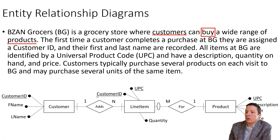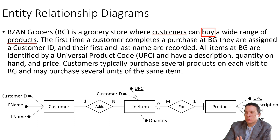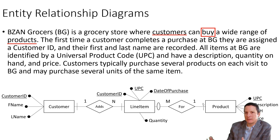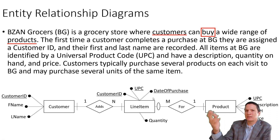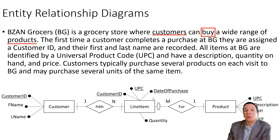Some of you may have already noticed the problem we're going to encounter here, which is that in this current design a customer could only purchase a product one time. So what we actually want to do is probably record something like the date of the purchase, so that on multiple days the customer could come back and purchase the same product or a product with the same UPC. I have to admit this is really a lot simplified from how we would actually design this database, because in reality we would probably have another relation like a shopping cart that records individual transactions. But for the sake of this demo, let's just leave it at this for the time being.